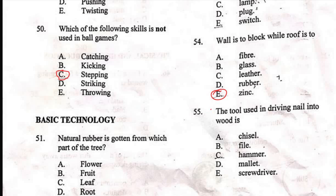Question 55: 'The tool used in driving a nail into wood is —.' Options are: A) chisel (no, that's for boring), B) file, C) hammer, D) mallet, E) screwdriver. The tool used in driving a nail is the hammer — you hit it on the nail and the nail goes in. The right option is C. That completes basic technology, which had just five questions.